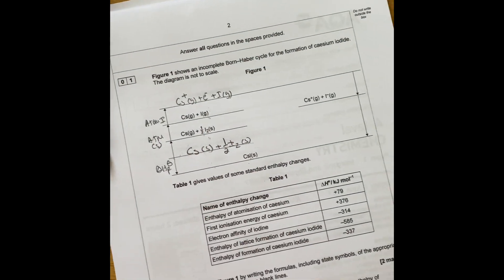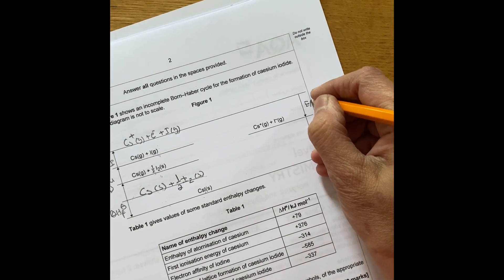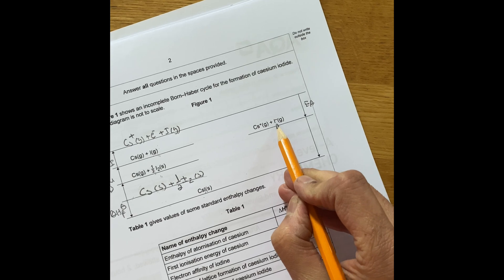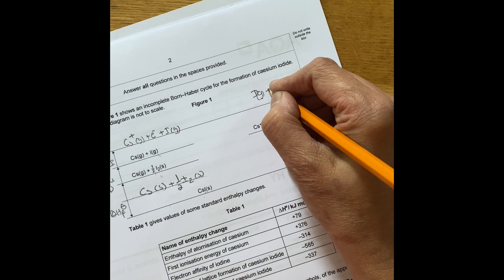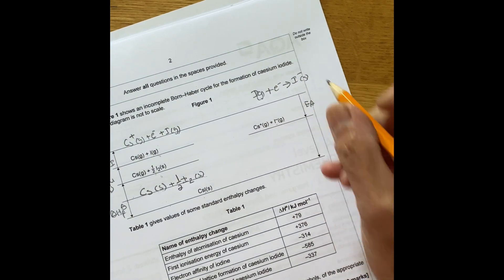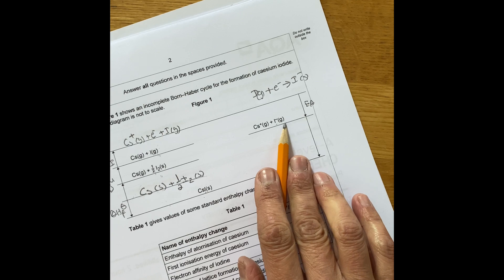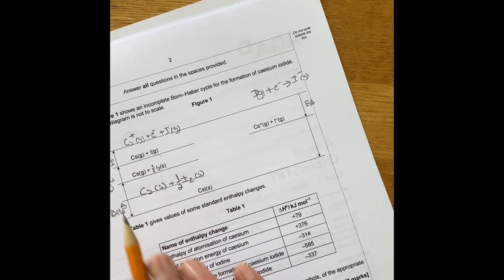So then you keep that one there plus iodine gas, maintain that because that doesn't change. Then you've got the first electron affinity. So that's electron affinity of iodine. Electron affinity of iodine is iodine gas plus electron goes to iodine minus gas. So that's what's happening here.